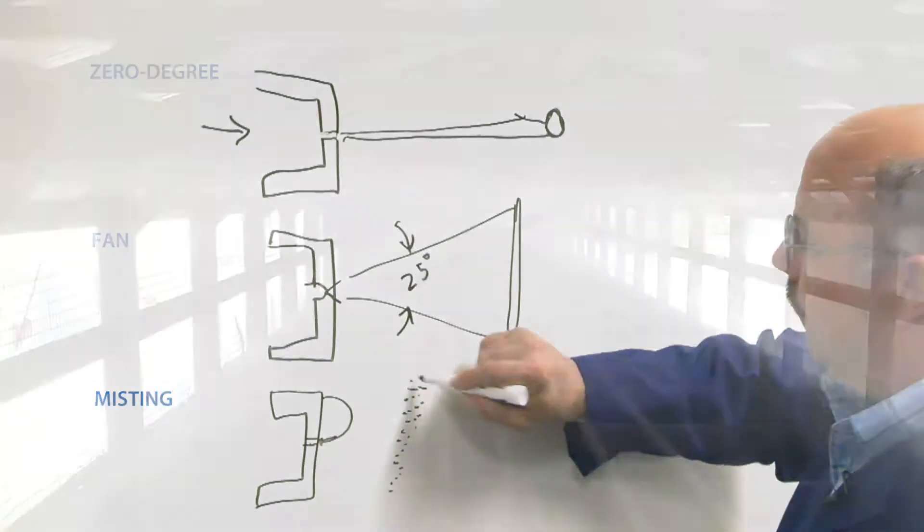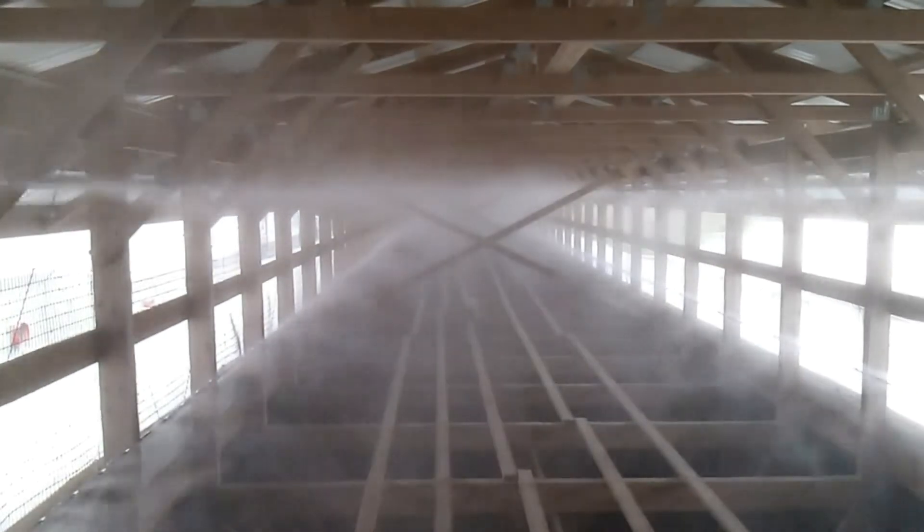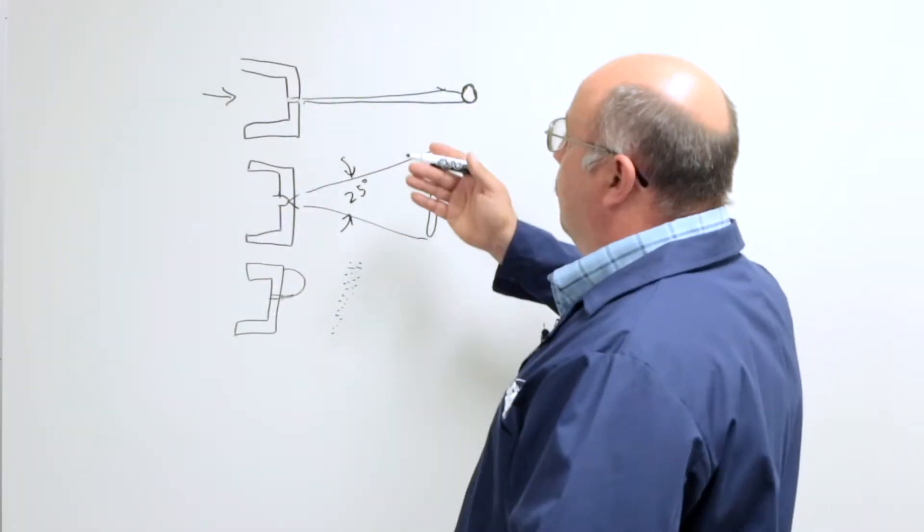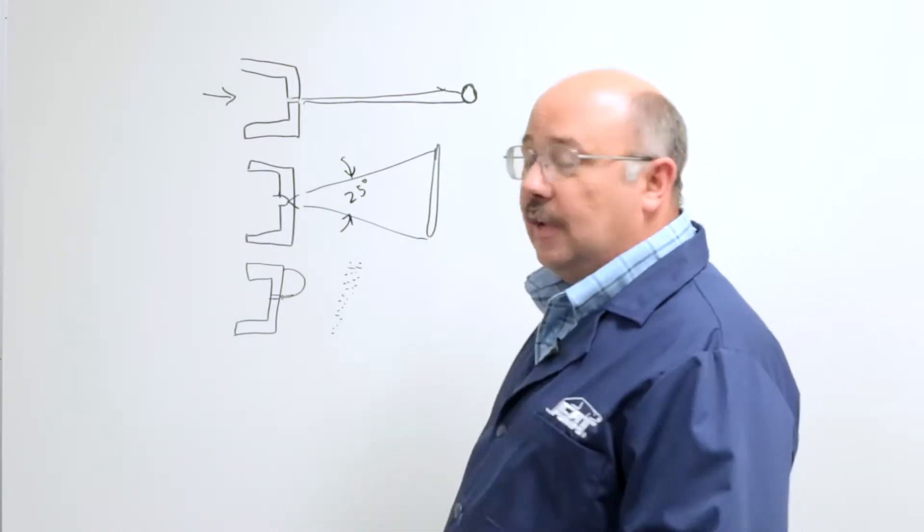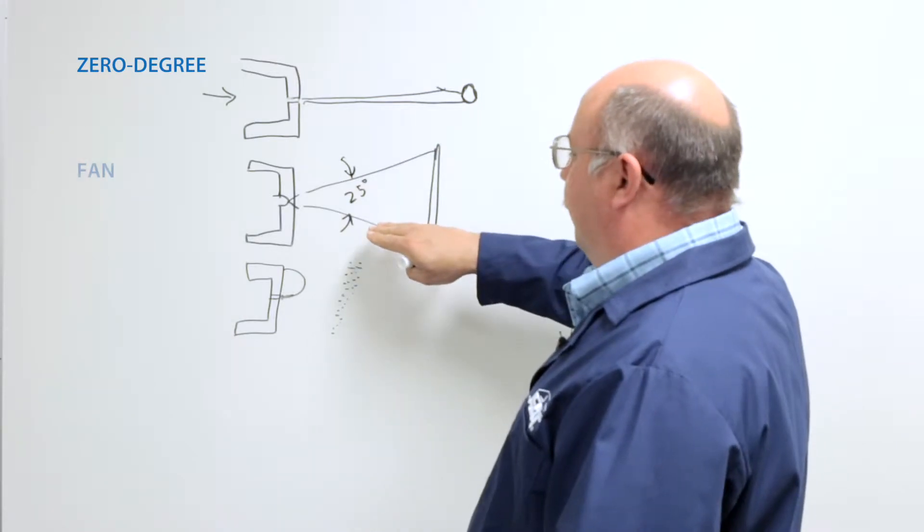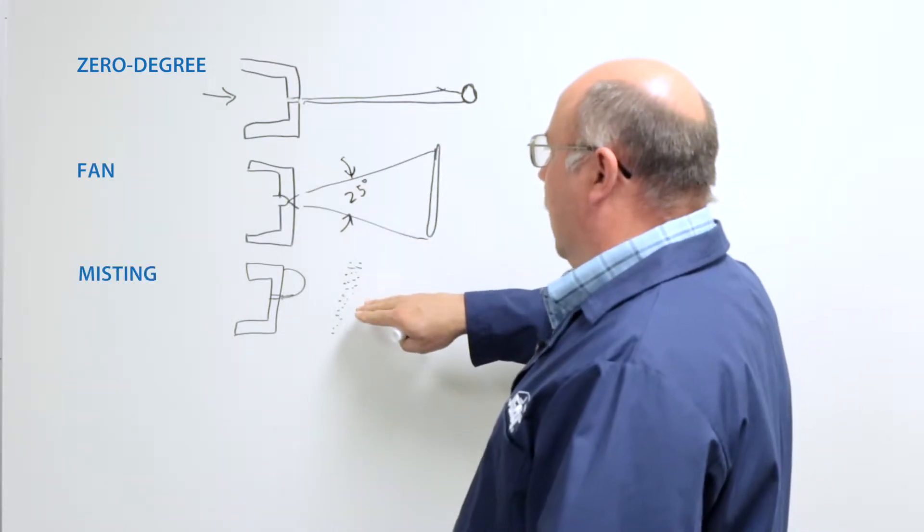And it makes like a mist or a fog, and that's used for evaporative cooling and applications like that. So those are your three basic types of nozzles. Again, we have the zero degree or direct impact, the fan nozzle, and the misting nozzle.